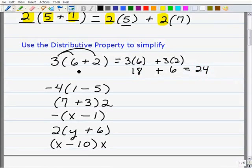The sum there is going to be 24. We can check this by seeing that 6 plus 2 is 8 and 8 times 3 is 24. So there's another verification of the distributive property.